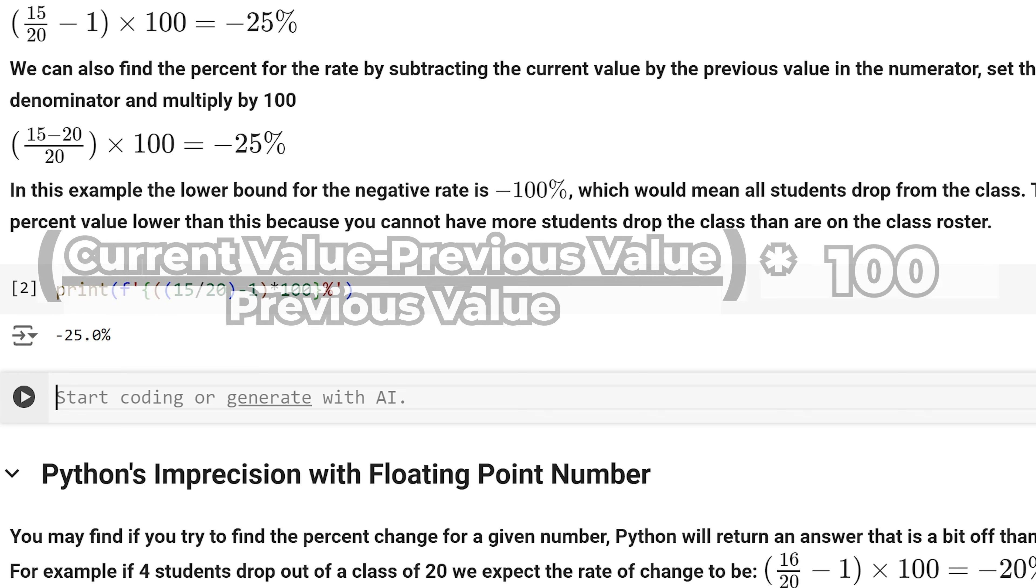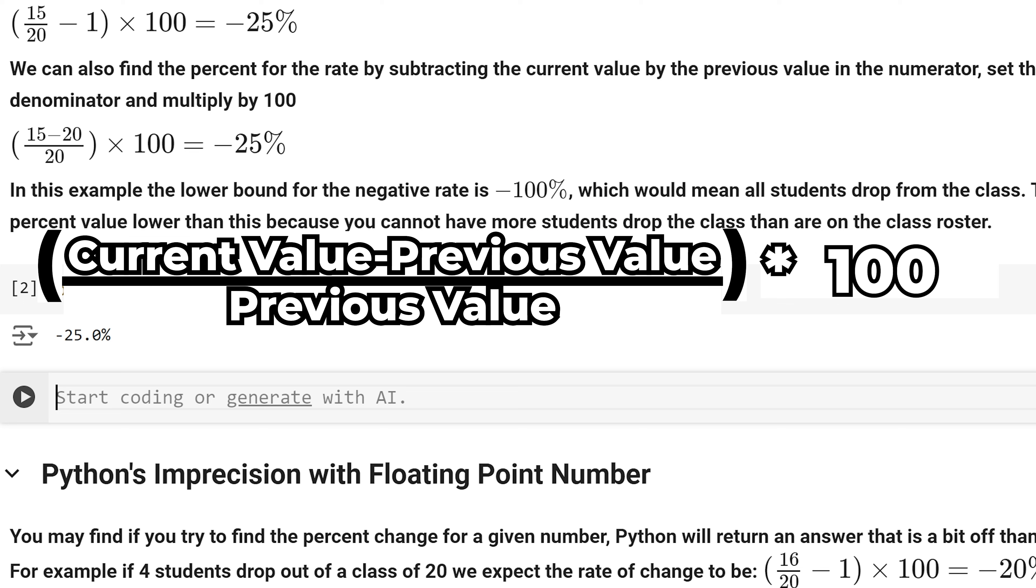For the second method to find the rate, we can take the current value, subtract it by the previous value, take that difference, and divide it by the previous value, then multiply it by 100. And we should get negative 25 percent again.